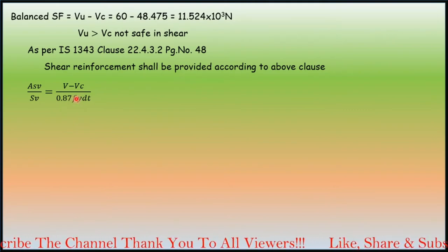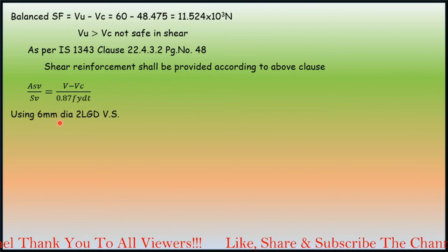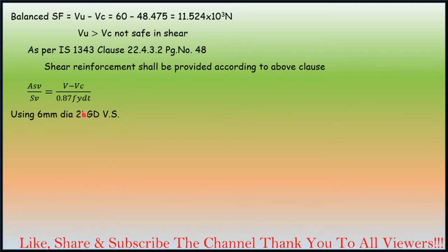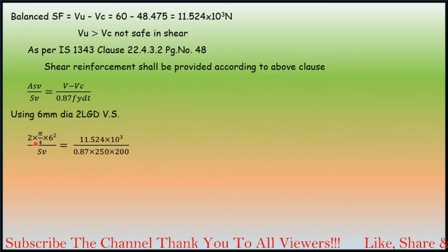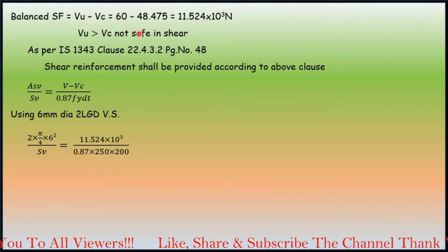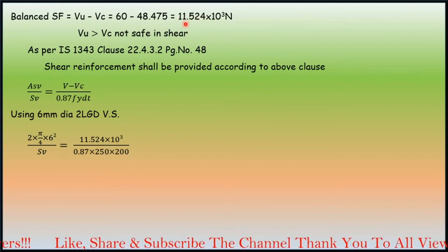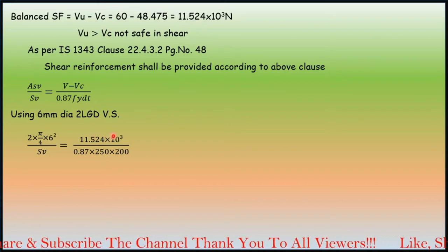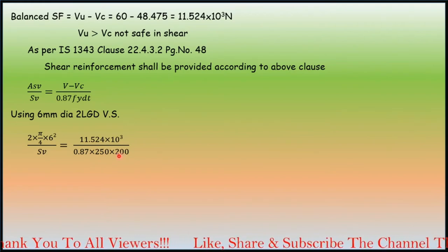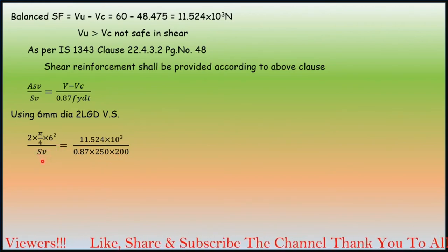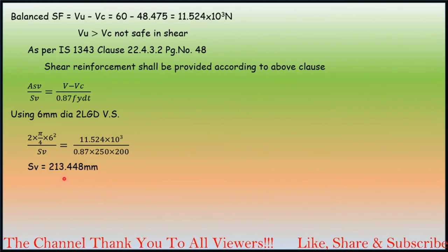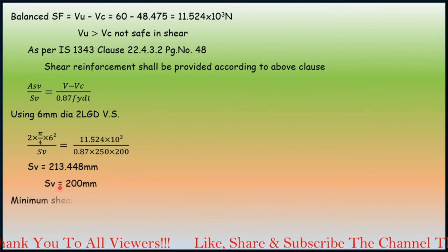Using 6 mm diameter two-legged vertical stirrups, we are going to calculate the area of stirrups. The remaining V minus Vc is Vu minus Vc, that is the remaining shear force 11.524 × 10³ divided by 0.87 × 250 × 200. We have to consider only one unknown as spacing of the stirrups, so spacing comes out to be 213.4 mm. Let's take it as 200 mm.